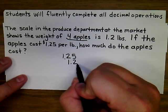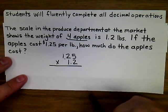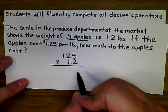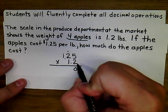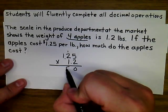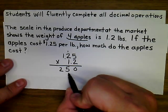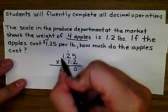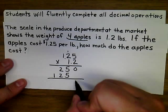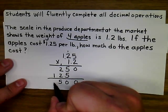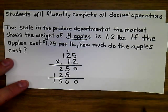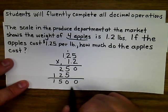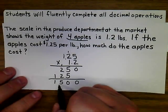We follow a slightly different procedure for multiplying decimals than for adding and subtracting. We set up the problem and ignore the decimal points for now, multiplying normally: 2×5=10 carry the 1; 2×2=4 plus 1 is 5; 2×1=2; then 1×5=5 (placed correctly, shifting left); 1×2=2; 1×1=1. Bringing our answers down gives us 1,500. We then count the total decimal places — there are three — so we place three decimal places in our product.